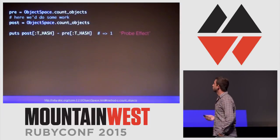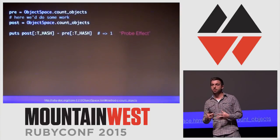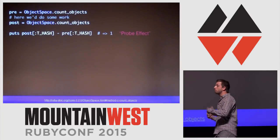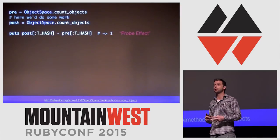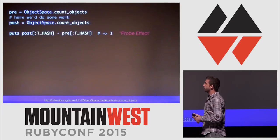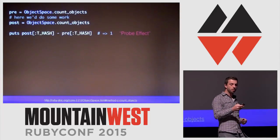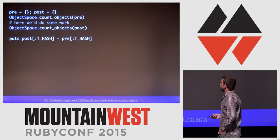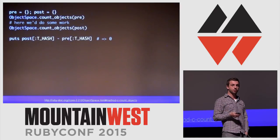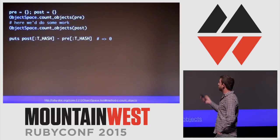This is an illustration of the probe effect. When you construct the monitoring itself, you end up creating objects, and by creating those objects you affect the ultimate result. In this case, when it goes to count the objects, the first thing it does is create a hash, which is why the hash count ends up with a difference of one. These APIs actually allow you to pass in your own hashes, so you can eliminate probe effect by creating the hashes beforehand and getting the result you want.